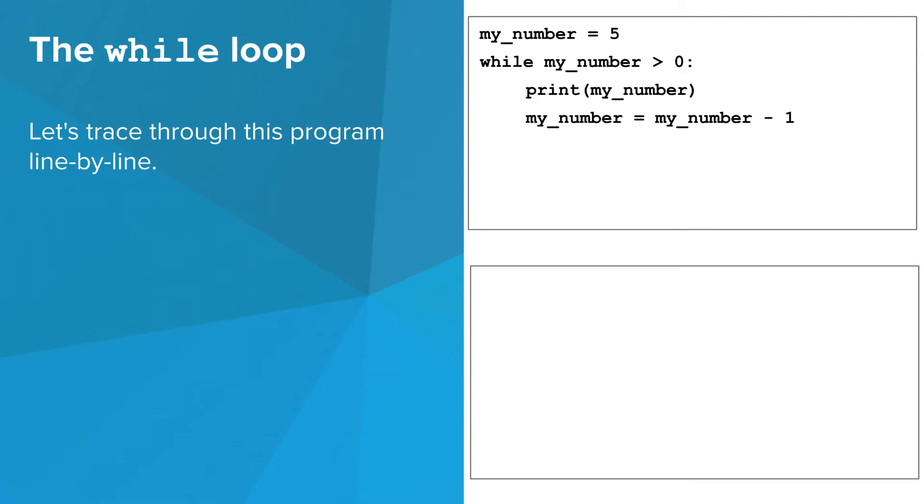Let's trace through this program line by line. We use a little box to represent the variable my_number. The first line sets this variable to 5. The interpreter checks the condition. Since 5 is greater than 0, the condition is true, so the interpreter will continue the body of the loop.